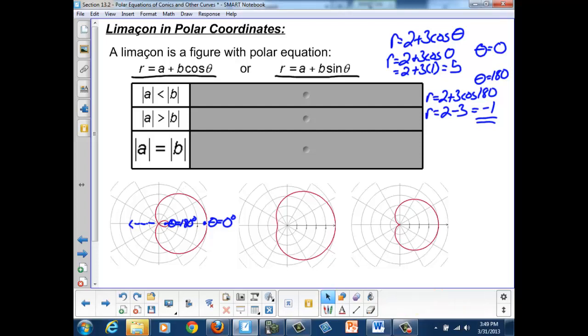Whenever my b value is larger than my a value, r can be negative. So, if b is greater than a, then r will be negative at some point, or at some value of theta. Which means that I have the opportunity to create this smaller inner loop. So, here, if b greater than a.